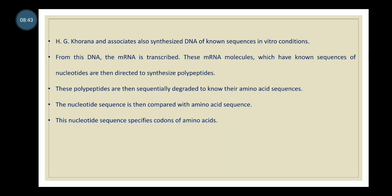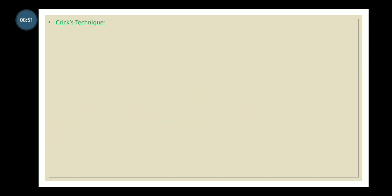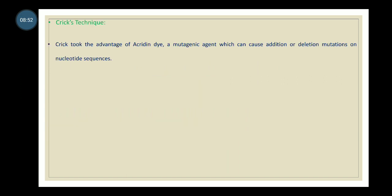This technique led to the determination of codons for all amino acids. Crick's technique took advantage of acridine dye, a mutagenic agent, which causes addition or deletion of nucleotides from the RNA sequence.